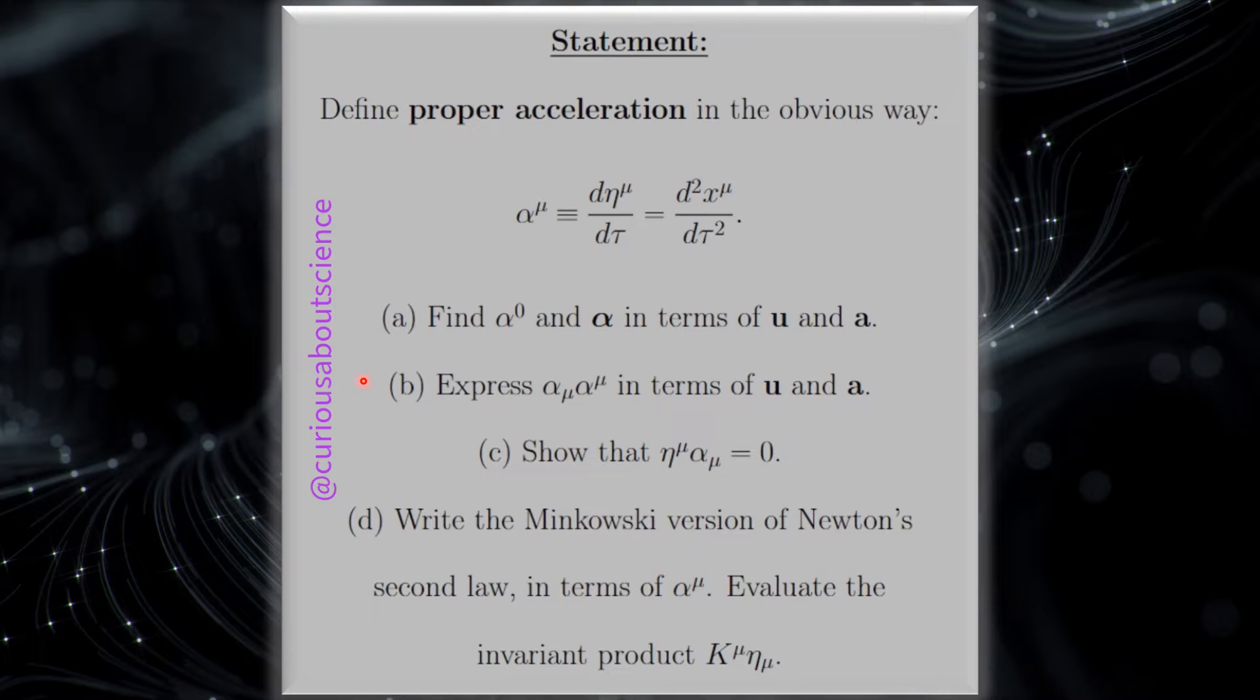B, express the four-dimensional scalar product. So remember, lower indice is covariant, and upper indice is contravariant. Point is that you have to flip the sign on the temporal when multiplying these two. We want to express this scalar product in terms of U and A as well. And then show that the scalar product of eta mu, alpha mu, is equal to zero. D, write the Minkowski version of Newton's second law in terms of alpha mu. Evaluate the invariant product, k mu, and eta mu as well.